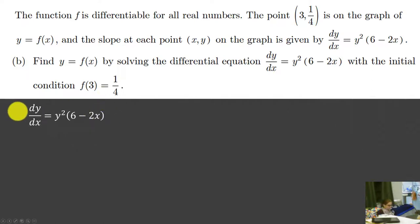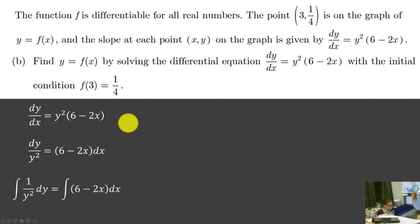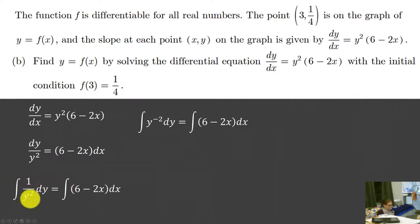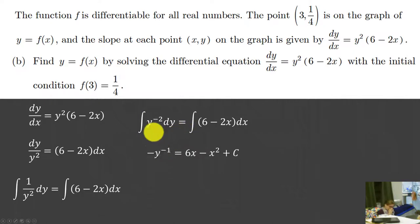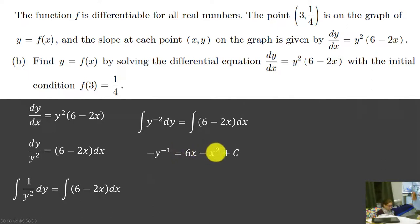First step for a differential equation is to separate. We separate the x's and the y's: divide the y squared to the left and multiply the dx to the other side. Now we write integrals and integrate both sides. To integrate more easily, we rewrite using exponential rules from algebra 2: 1 over y squared is equivalent to y to the negative second power, so we can use power rule. We add 1 to the exponent, giving y to the negative 1, and divide by negative 1, the same as multiplying by negative 1.